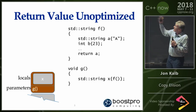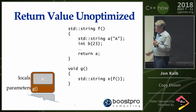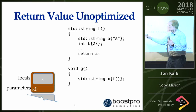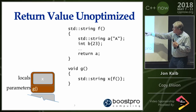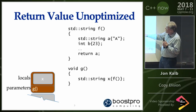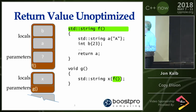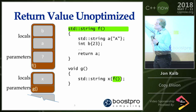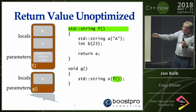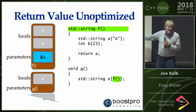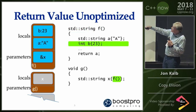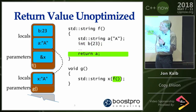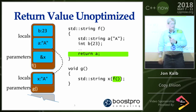So this is the unoptimized version of how we classically think of return value optimization working. Here's a function G calling a function F. This is the stack for G, with its parameters — there are none — and then the locals, where there's an X which we're going to populate by calling F. Now we call F, and this is the stack frame for F, including the parameters we pass in — remember, we said there is one. Then space for the locals. The parameter we're passing in is the address of the return value, which is the address of X. F populates B and A, and when we return, we copy A into the address we told it to copy.